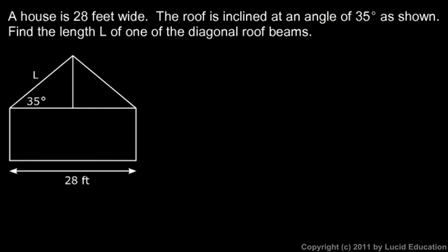Here we're told that a house is 28 feet wide. This diagram here is a cross section of the house, and that's the 28-foot width there. The roof is inclined at an angle of 35 degrees as shown, so the pitch of the roof there is 35 degrees above horizontal. Find the length L of one of the diagonal roof beams.